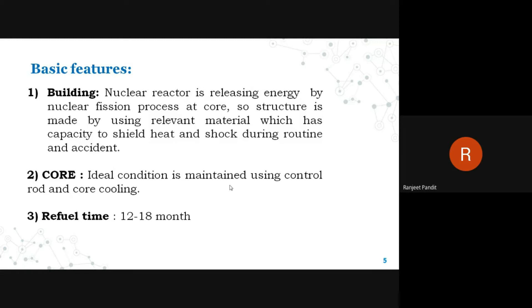The third feature is refueling time. Depending on the type of nuclear reactor, this is either 12 or 18 months, at which point the fuel rods need to be changed for better efficiency and safety. Fission products can deposit and cause the cladding material to expand and crack, which could lead to radiation leaking into the coolant and eventually outside the plant. Proper maintenance of refueling schedules is therefore essential.